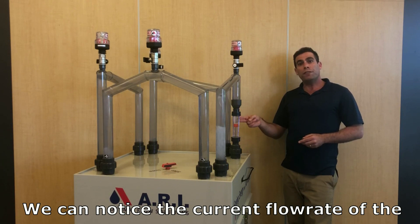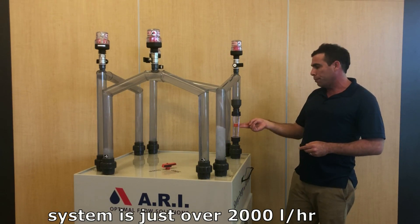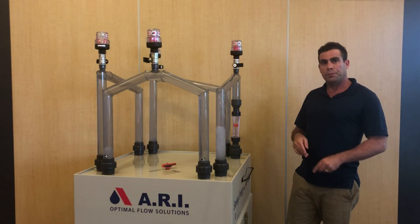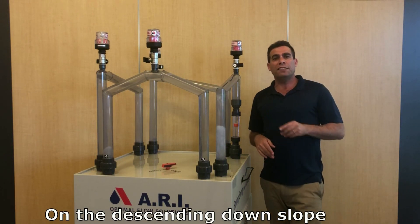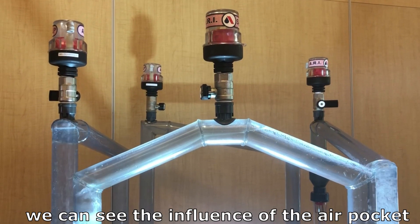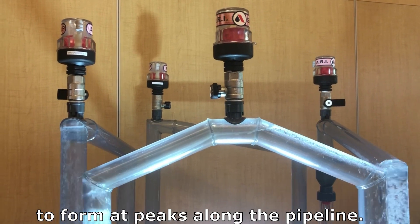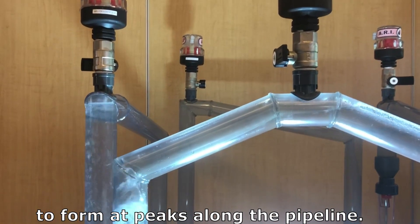We can notice the current flow rate of the system is just over 2,000 liters per hour. On the descending down slope, we can see the influence of the air pocket. This air pocket formation causes air pockets to form at peaks along the whole pipeline.